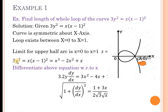Now we are finding the square root of 1 plus (dy/dx)². We rearrange and find dy/dx, then find (dy/dx)², then add 1, and simplify. After simplification, I get the square root of 1 plus (dy/dx)² equals (1 plus 3x) divided by (2√3 · √x).